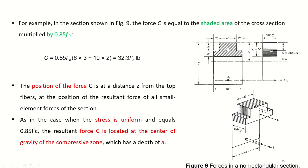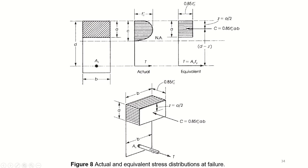For example, in the section shown in Figure 9 — which is not rectangular — the force C equals the shaded area of the cross section multiplied by 0.85 fc prime. The position of force C is at a distance z from the top fibers at the resultant of all small element forces of the section. When stress is uniform and equals 0.85 fc prime, the resultant force is located at the center of gravity of the compressive zone with depth a. This makes it easy to locate the resultant and find the moment arm between C and T. In the next lecture, we will derive how this moment arm contributes to the structural capacity of the beam. Thank you.